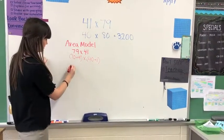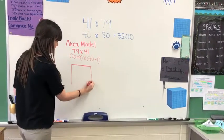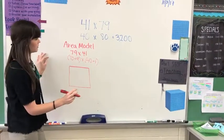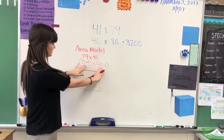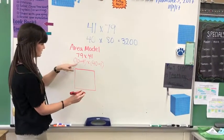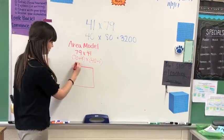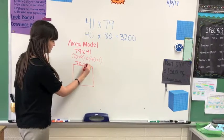I'm going to have to draw my area model that represents the area. When we multiply, we like to multiply each number by the other pieces. So that means I'm going to take my 79 and I'm going to put it across the top. 70 plus 9.